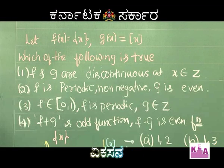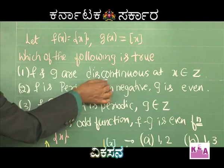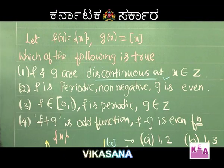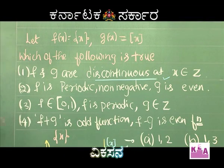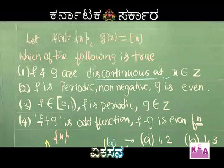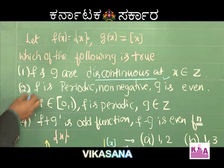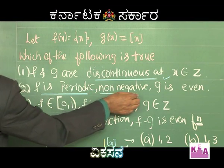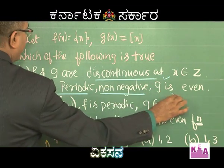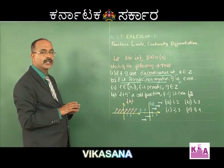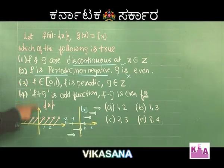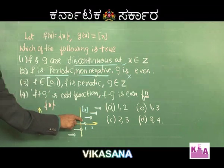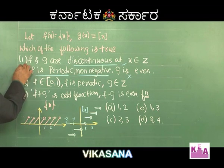Statement 1: f and g are discontinuous at x belonging to Z — this is 100% true. Statement 2: f is periodic — true. f is non-negative — true. But g is even — this is not correct, as is evident from the graph. So statement 2 is ruled out.